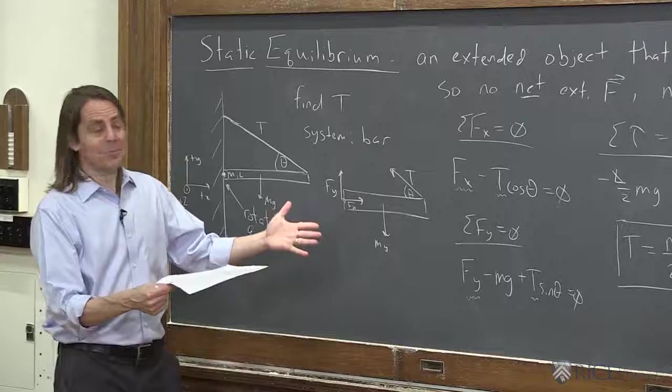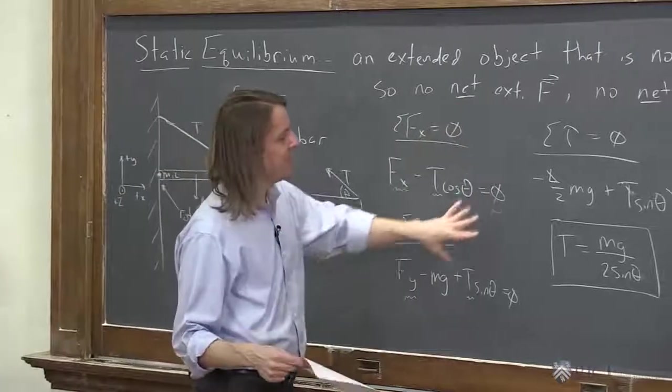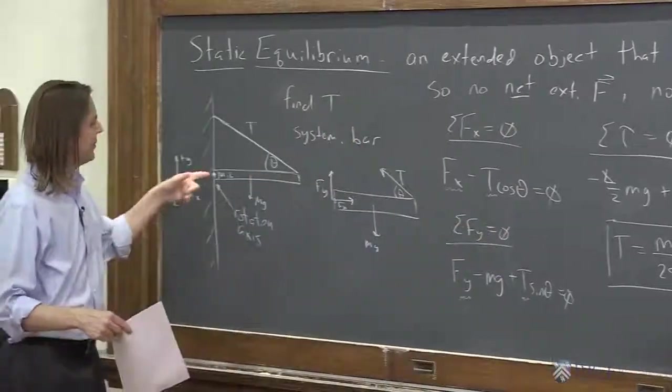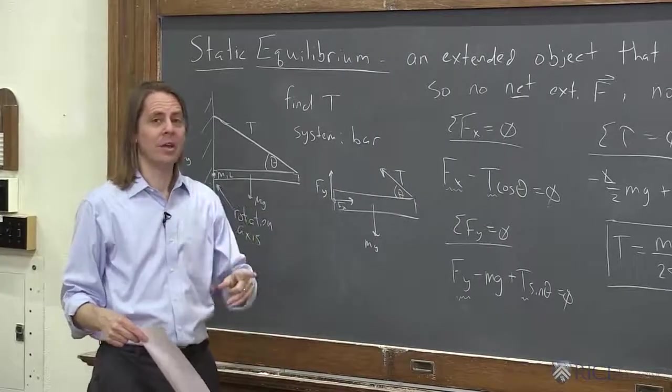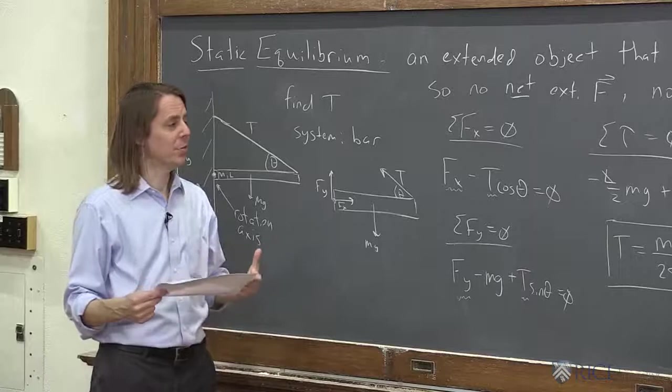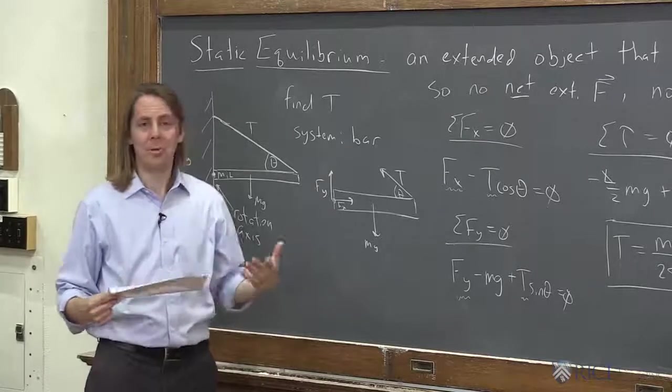So that's the static equilibrium problem. Like I promised, we ended up using only three of the equations were relevant. And if you pick your axis in the right place, they come out nice and easy. You pick your axis in the wrong place, and you might have a general three equations, three unknowns, which is still solvable, but not as easy.